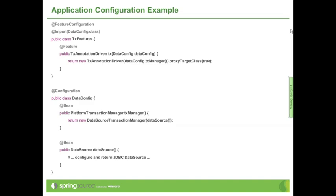In this case, there is a specific feature specification called TxAnnotationDriven being returned. TxAnnotationDriven is a feature specification object that instructs the container to set up the annotation processing part of Spring's transaction support. With a builder-style API, it allows you to programmatically configure Spring's annotation-based transaction support. This is typically used in combination with regular @Configuration classes, where the @Configuration class would set up the actual strategy — for example, the transaction manager and the data source that the transaction manager refers to — setting up the entire infrastructure for annotation-driven transaction processing.